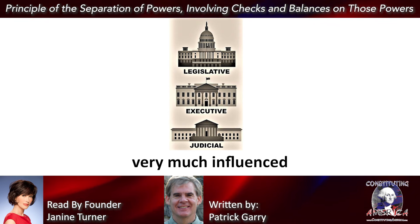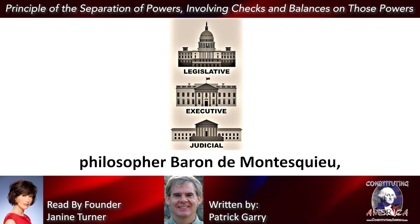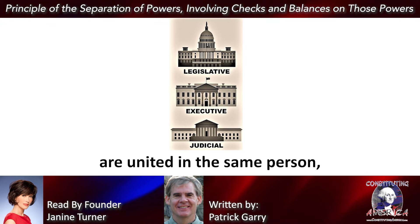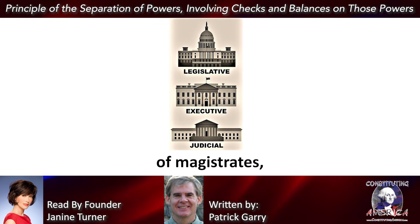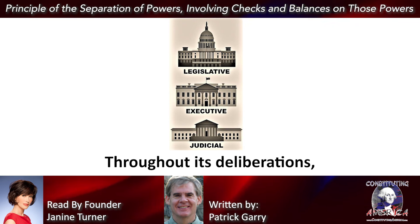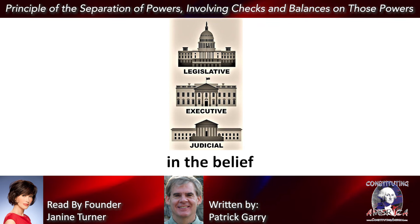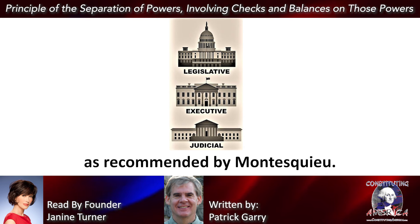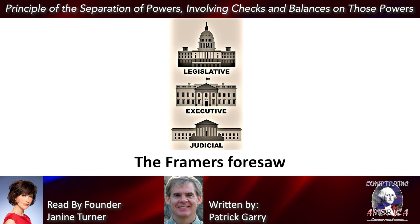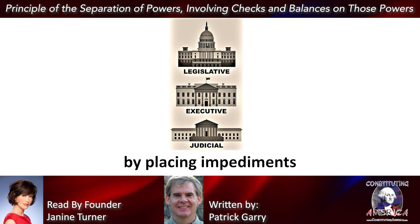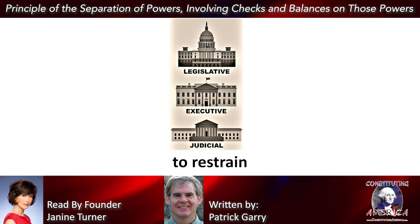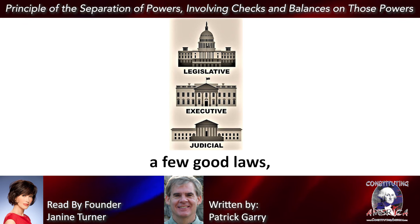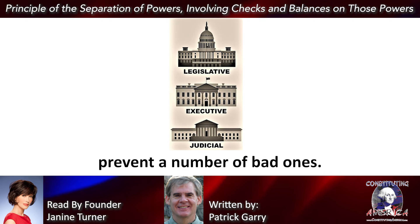In this respect, the framers were very much influenced by the earlier writings of French philosopher Baron de Montesquieu, who wrote that "when the legislative and executive powers are united in the same person or in the same body of magistrates, there can be no liberty." Throughout its deliberations, the Constitutional Convention remained steadfast in the belief that governmental power should be separated and balanced among the three branches of government, as recommended by Montesquieu. The framers foresaw that the separation of powers structure, by placing impediments in the path of the political process, would help to restrain the excesses of lawmaking. Although this structural bias in favor of the status quo would naturally defeat a few good laws, it would even more importantly prevent a number of bad ones.